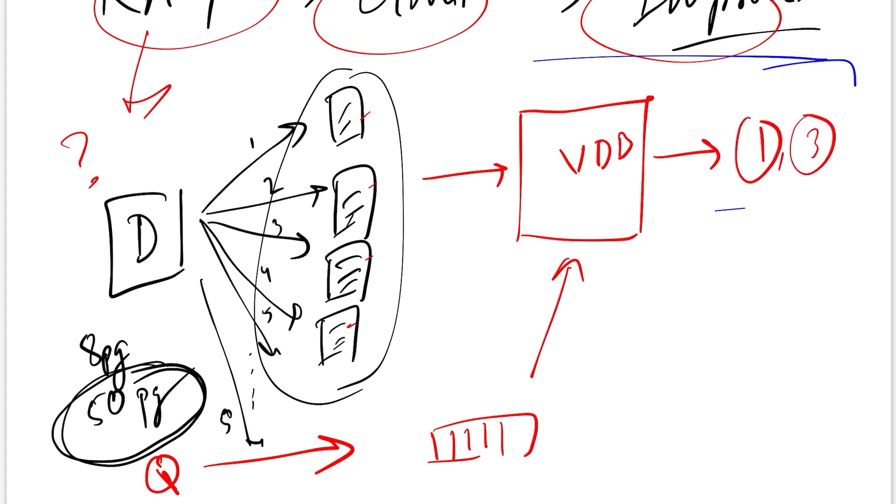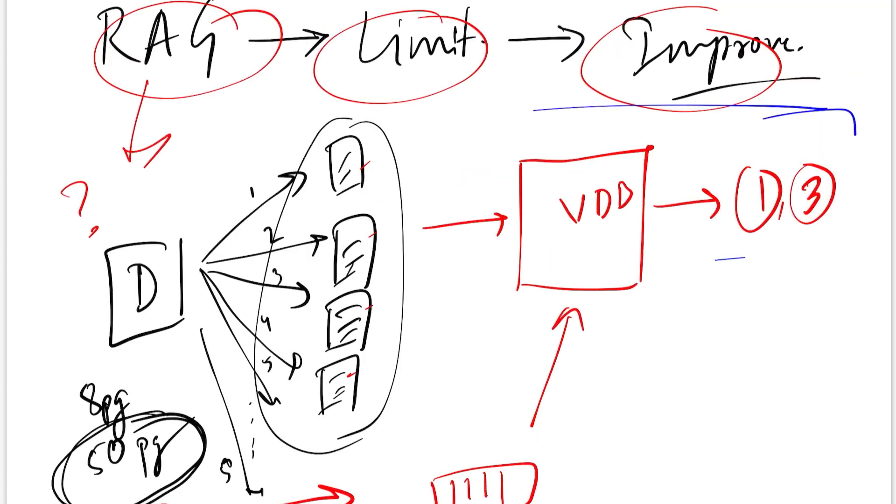You get a list of IDs corresponding to each of these documents which are nearest to the question embedding. So let's say you get one and three as your nodes that might have the answer. Now there are multiple nuances of how you implement a vector database.